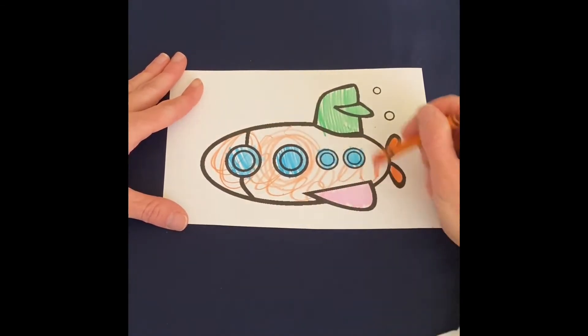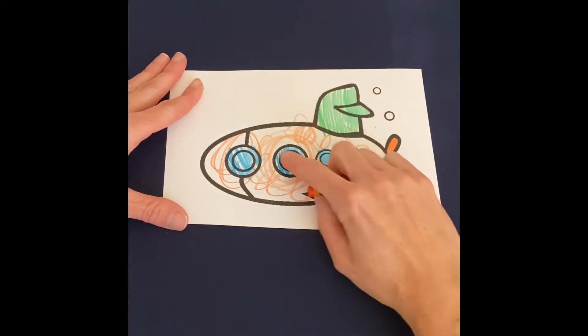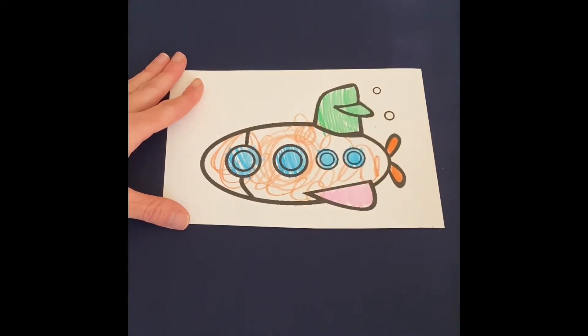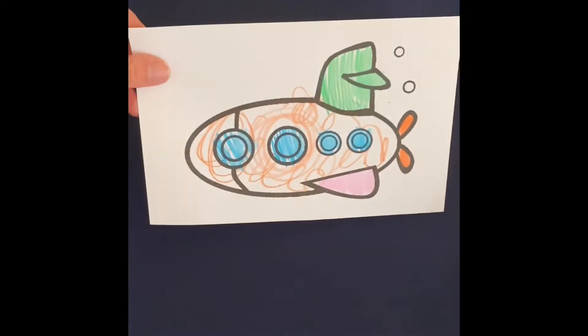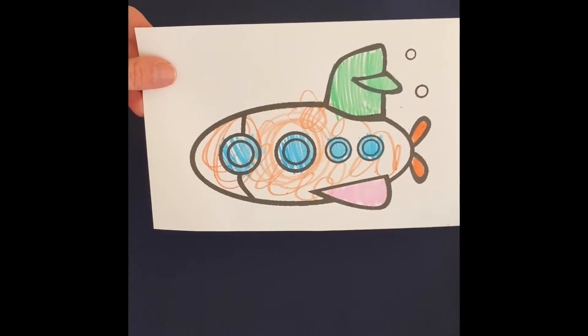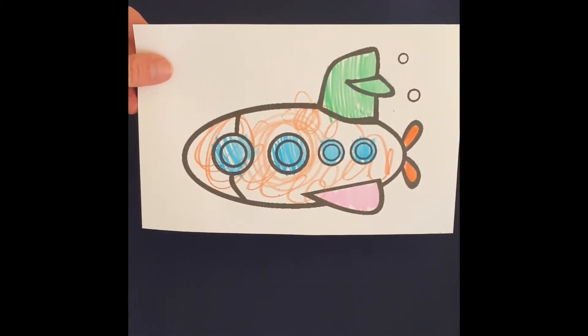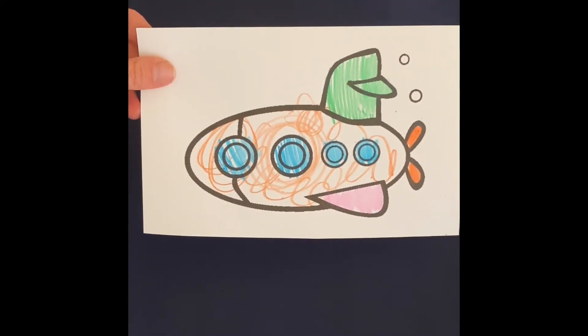You can encourage them to use lots of different colors and talk about maybe they can color the window and the fins and the propellers in the back. I think I'm done with my coloring, so I'm going to cut this out and then I will show you our next part, which is making the ocean.